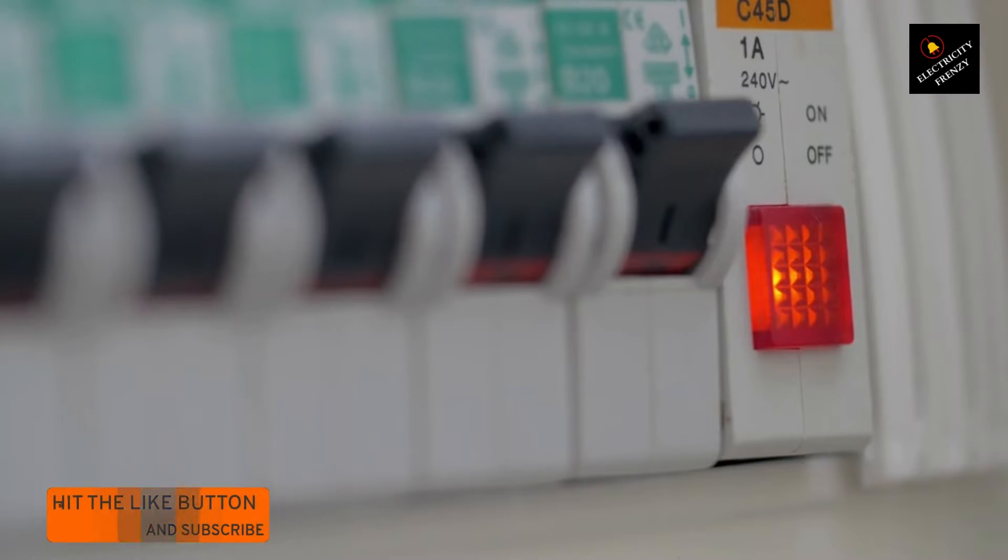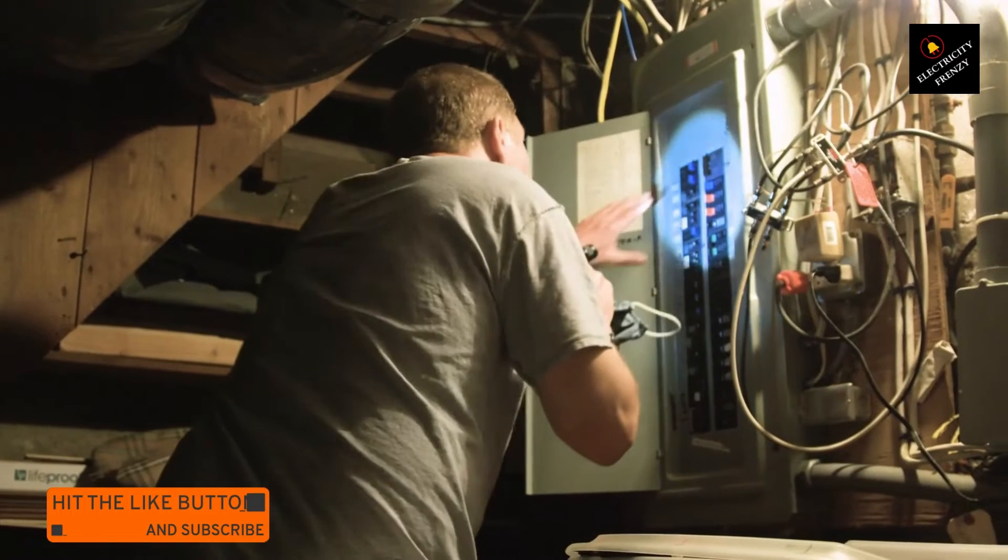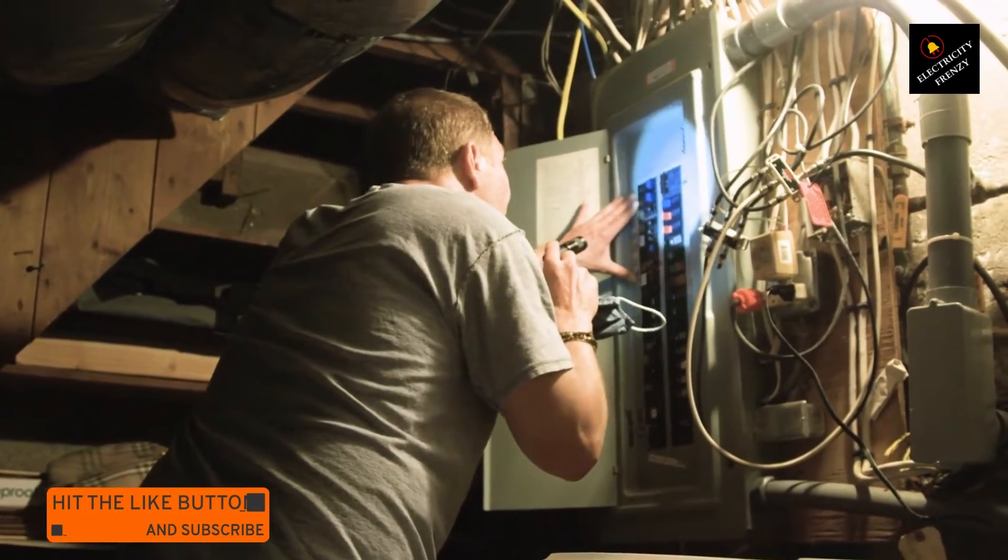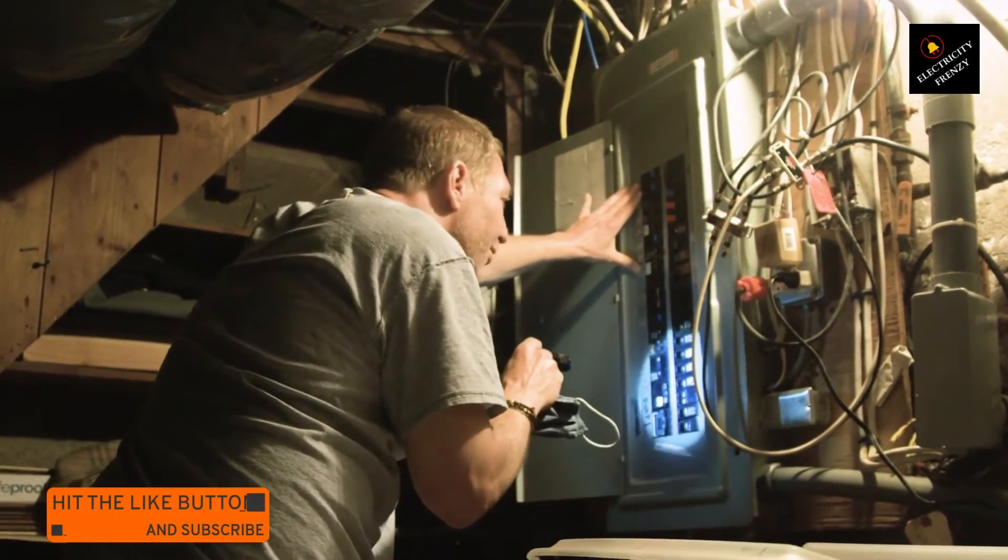Examine the power cord and internal wiring of the dryer for any signs of wear, fraying, or exposed wires. If you notice any issues, discontinue use and have a professional technician repair or replace the damaged parts.